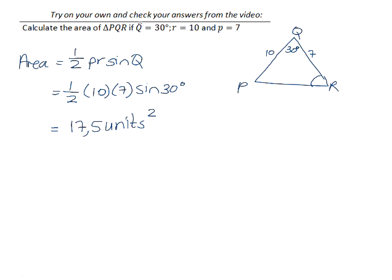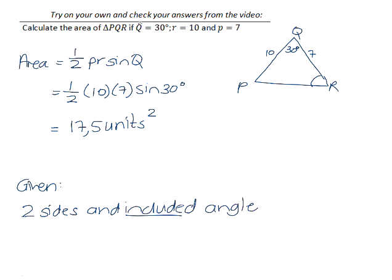And one final note about the area rule is you need to be given, in order to find the area, you must be given two sides and the included angle. It must be the angle that is included by the two given sides. Like Q is here, it lies in between the two sides that were given.